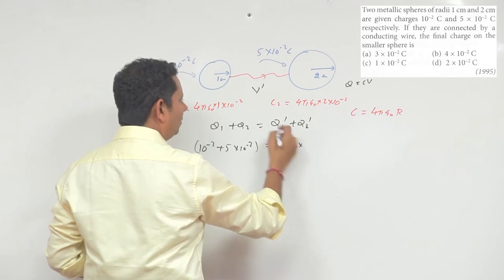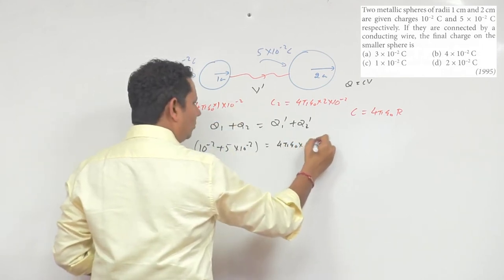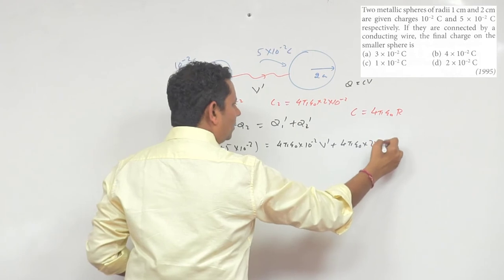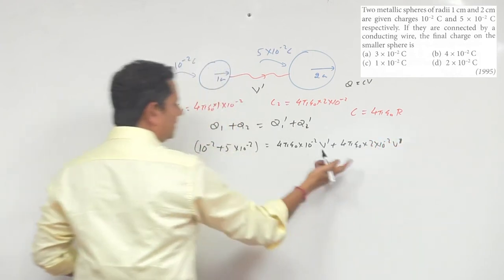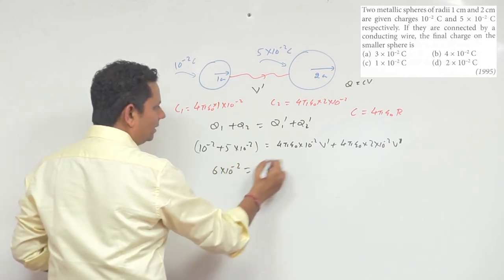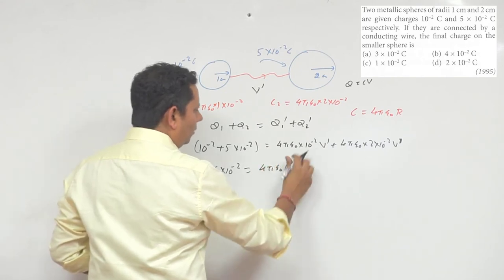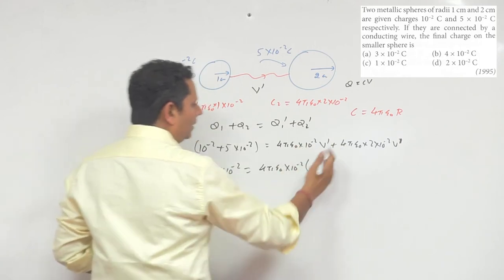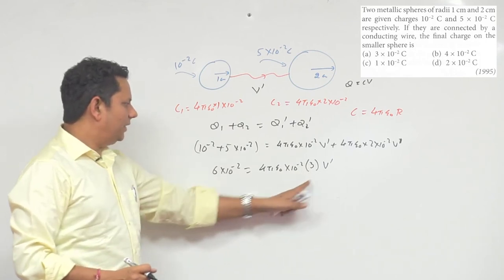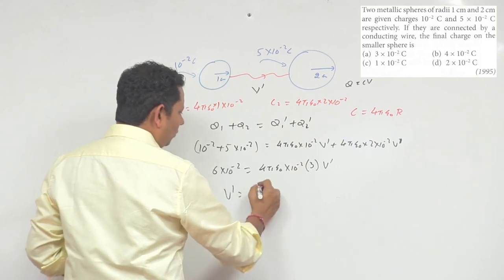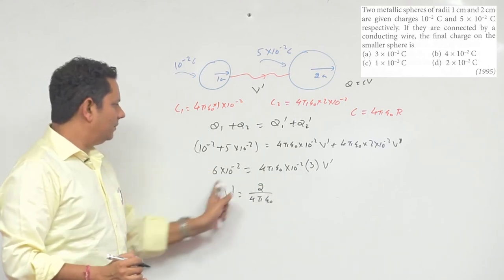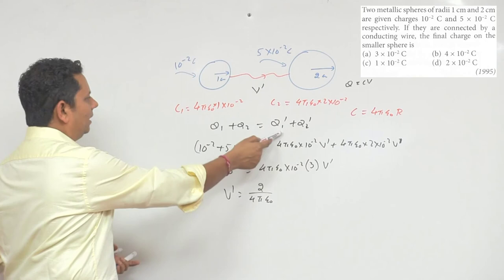Setting up the equation: 6 into 10 to the power minus 2 equals 4 pi epsilon-not multiplied by 10 to the power minus 2 into V dash, plus 4 pi epsilon-not multiplied by 2 into 10 to the power minus 2 into V dash. Taking V dash and 10 to the power minus 2 common, the left side is 6 into 10 to the power minus 2, right side gives 4 pi epsilon-not into 3 into V dash. Cancelling 10 to the power minus 2, and dividing 6 by 3, the common potential V dash equals 2 divided by 4 pi epsilon-not.